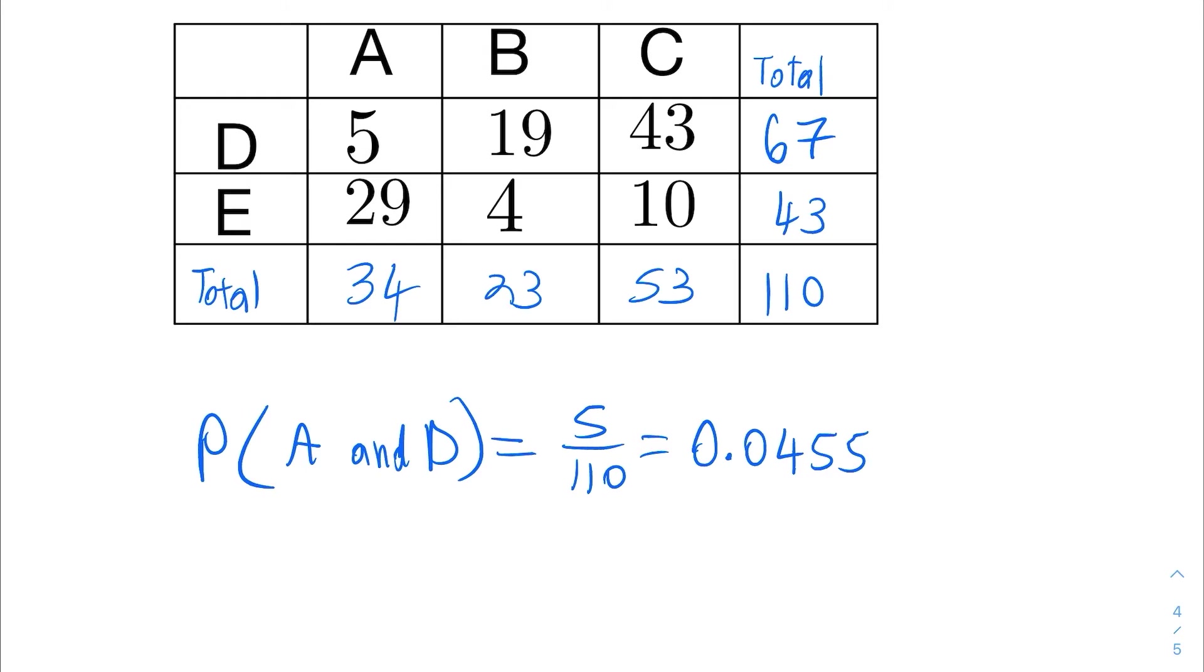And then you can do the other joint ones here. You have six of them in total. For instance, the probability of A and E comes from the intersection where A and E meet. So that's going to be 29 over 110. And that's the joint probability of A and E happening together. And that's going to be roughly 26%.